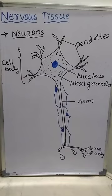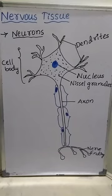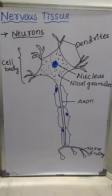Nervous tissues are specialized in reception, integration, and transmission of stimuli or impulses to different parts of the body. All living organisms are able to respond to stimuli. Response to stimuli is one of the defining characteristic features of a living organism.